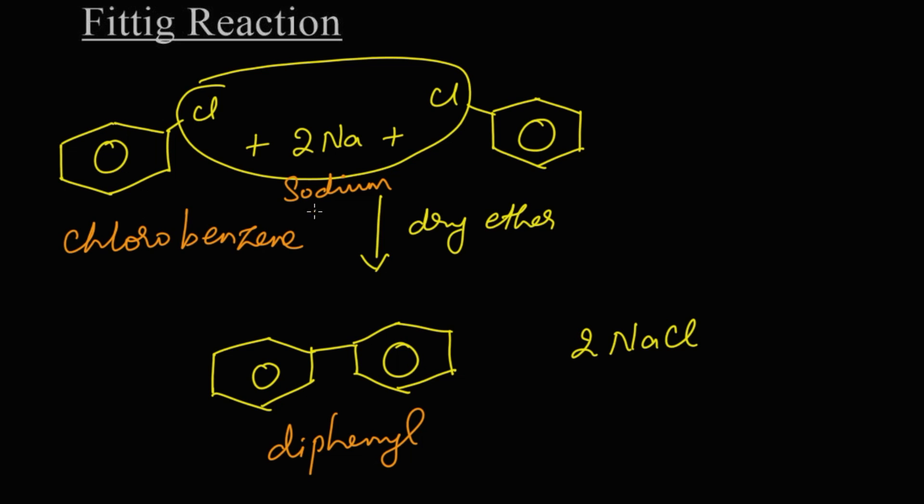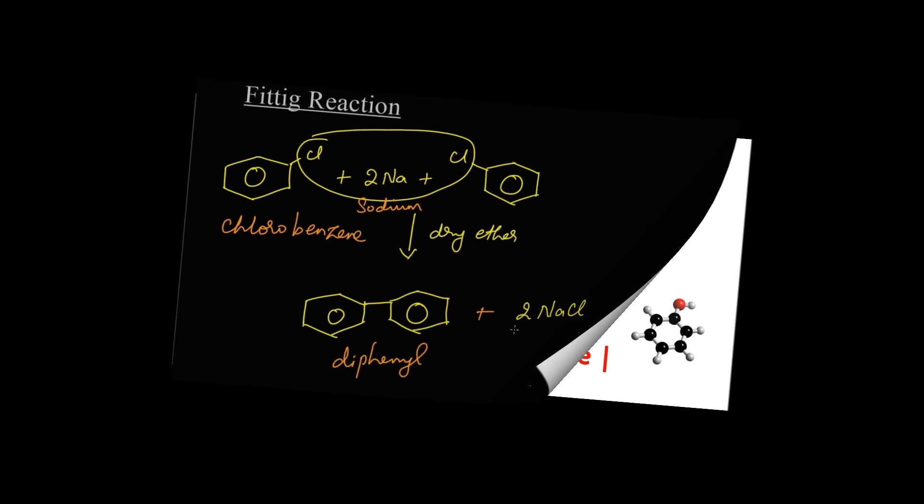Come on, let's summarize the reaction. When 2 chlorobenzene reacts with 2 sodium metal in the presence of dry ether, we get a product which is known as diphenyl along with sodium chloride. Thank you so much.